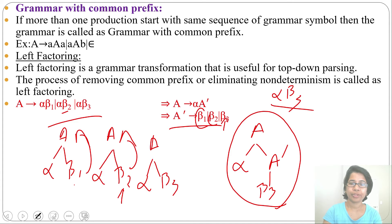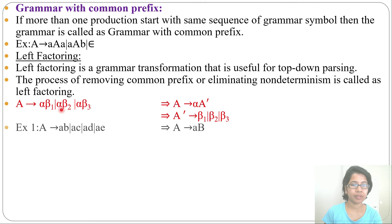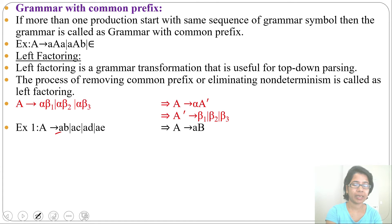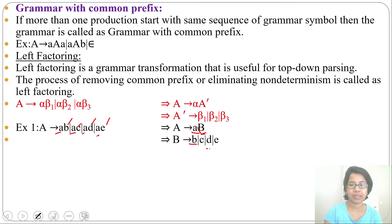Let's see some examples. First example: from A you can derive ab, ac, ad, or ae. The common prefix is 'a' in every production. So from A, simply derive a B', where B' is a new variable. Then from B' derive b, c, d, or e.